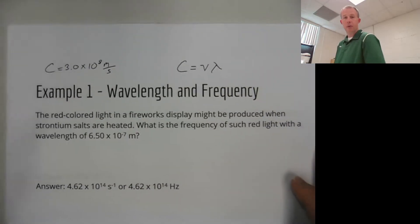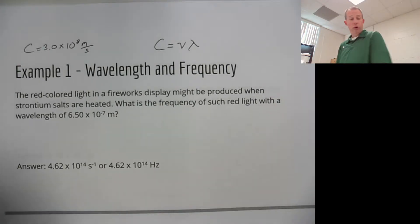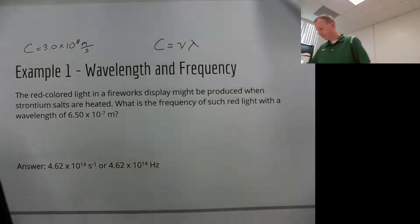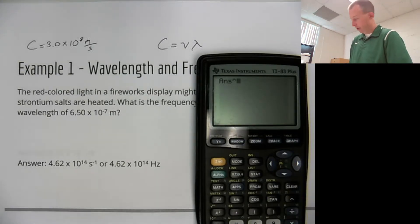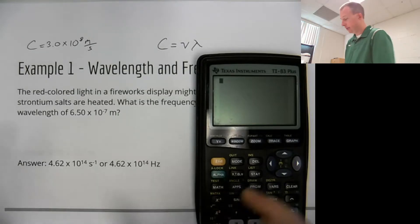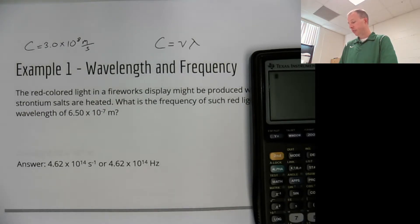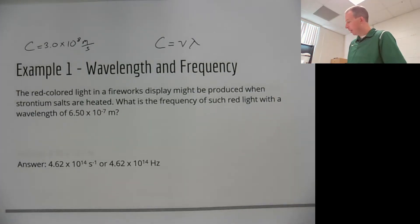Now I want to go over some examples of how to do these calculations. You're going to want a calculator — ideally a scientific graphing calculator. If you use your phone, turn it sideways and you'll get a scientific calculator. We're going to be dealing with numbers in scientific notation. Don't get freaked out. These problems can look intimidating, but they shouldn't be because all you're doing is basic algebra.